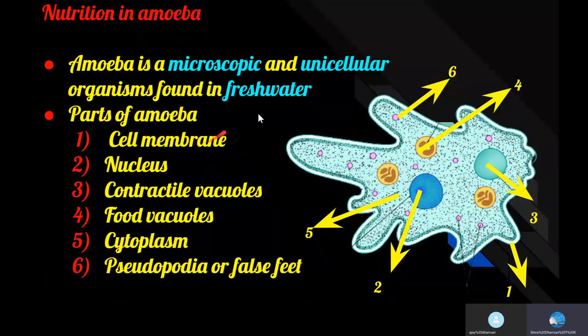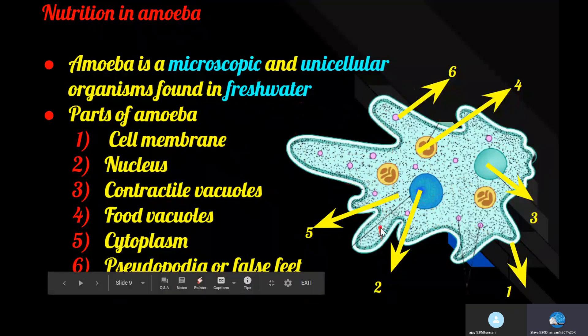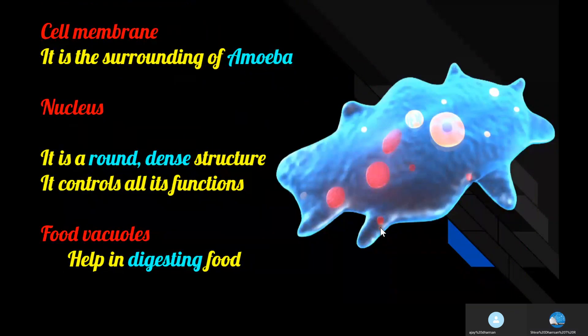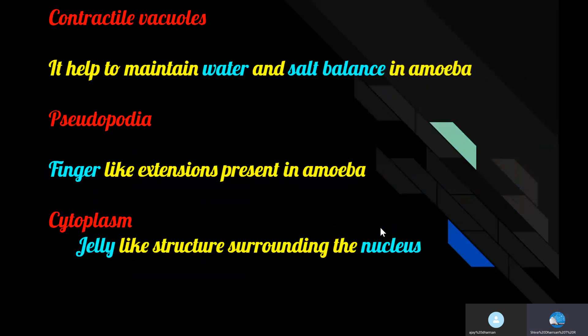Amoeba also has pseudopodia — the finger-like extensions. The cell membrane is the surrounding wall of the amoeba. The nucleus is a round-shaped structure that controls all functions of the amoeba. Food vacuoles help in digesting the food taken in. The contractile vacuole helps to maintain water and salt balance. Cytoplasm is the jelly-like structure surrounding the nucleus, contractile vacuole, and food vacuoles.